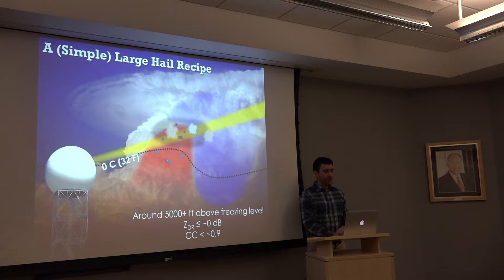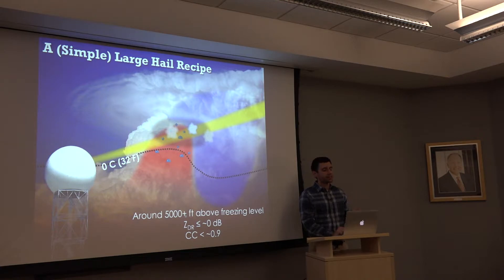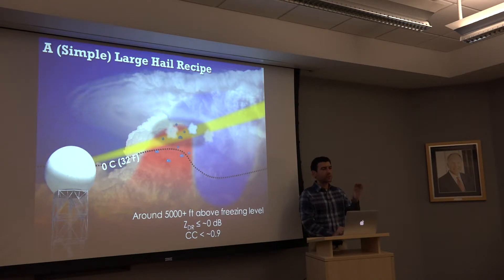Around 5,000 feet plus above the freezing level, we're dealing with temperatures around negative 10°C, negative 15°C, even negative 20°C. These really cold temperatures are where we want to focus to look for where hail is growing in an updraft.